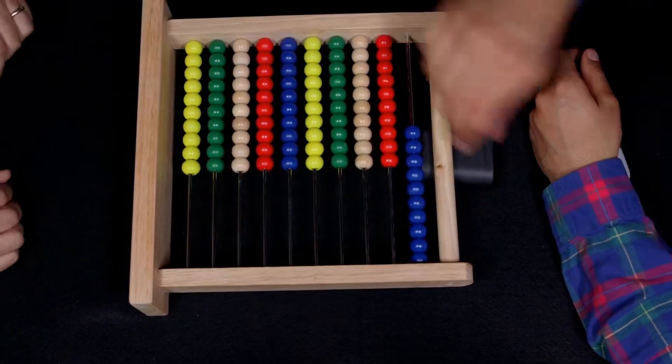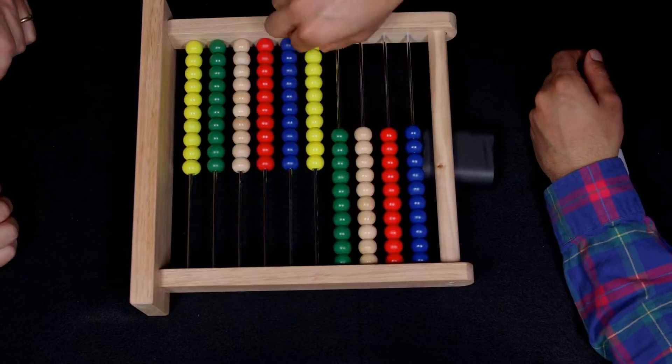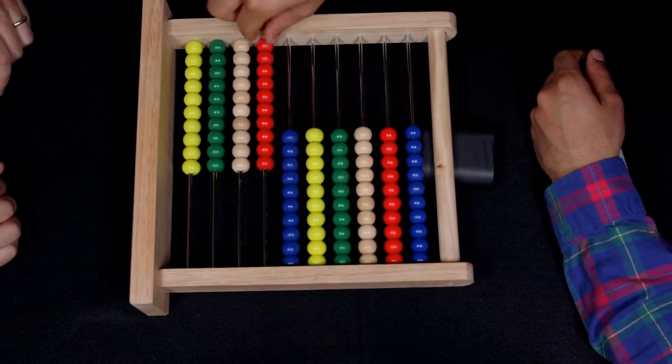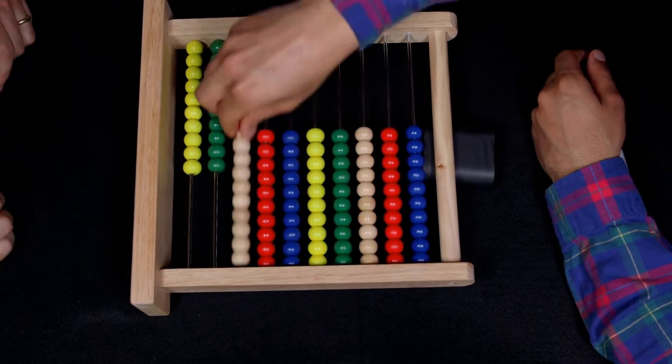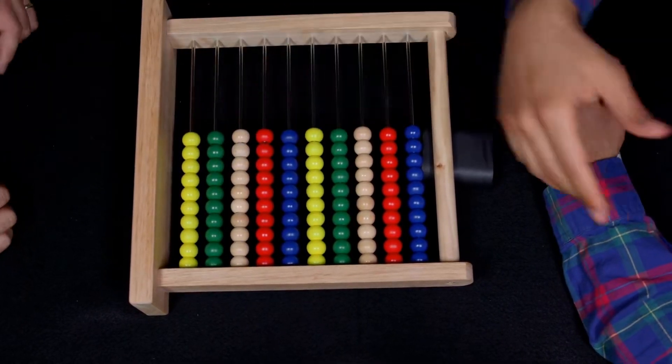There's ten, ten there so then maybe that would be twenty, thirty, forty, fifty, sixty, seventy, eighty, ninety, a hundred. Yeah you could count a hundred beads to keep track of things.